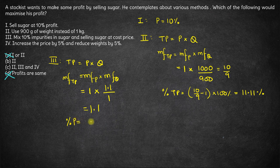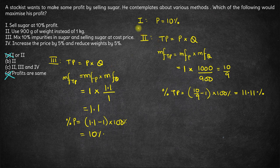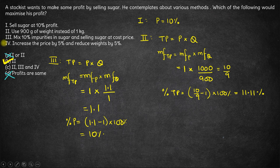The percentage profit, i.e., multiplication factor minus 1 into 100%, comes out to be 10%. Although options 1 and 3 give the same 10% profit, option 2 is obviously better than both. So option C also cannot be the answer. The best possible answer is option B. Although we need not solve the fourth part, we can already confirm that option B is the right answer.